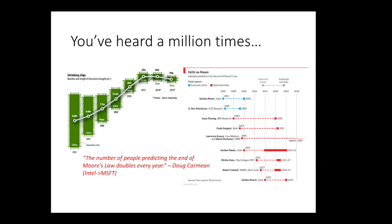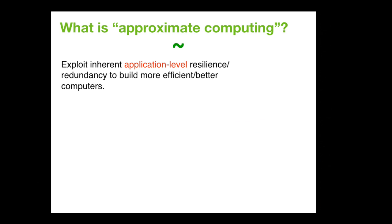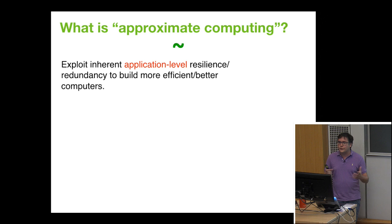We need to find ways to build better computers. We can't just rely on device technology getting better — we're approaching the atomic limit. Approximate computing is one promising idea. It exploits the inherent application-level resilience and redundancy that exists in the application itself to make computers more efficient. Those applications I showed earlier do not need precise computing — they don't need all bytes of storage or computation to be perfect.